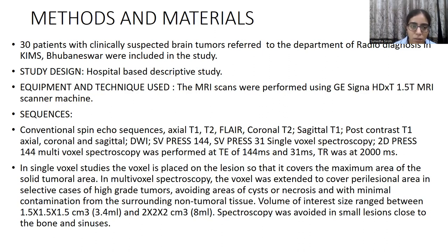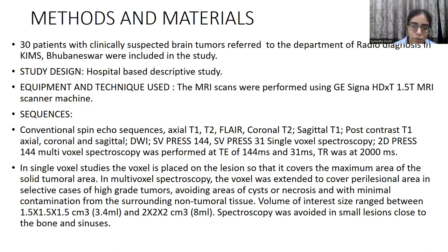The sequences taken were conventional spin echo sequences: axial T1, T2 FLAIR, coronal T2, sagittal T1, post-contrast T1 axial, coronal and sagittal, DWI, SV PRESS TE 144, SV PRESS TE 31 single-voxel spectroscopy, 2D PRESS TE 144 multi-voxel spectroscopy — performed at TE of 144 milliseconds and 31 milliseconds, and TR of 2000 milliseconds.